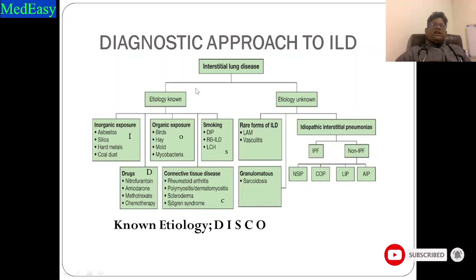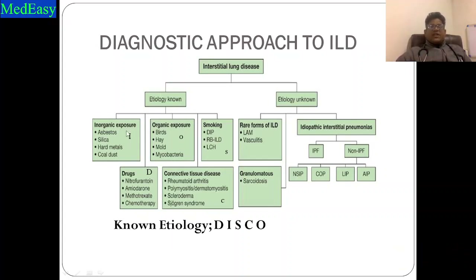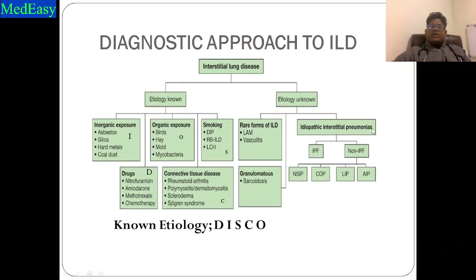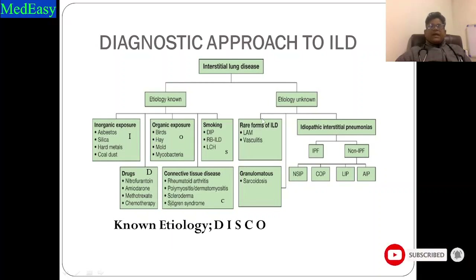It is very important to know the etiology of ILD because when it comes to treatment, if you know the inciting event, you can avoid exposure to those factors and that will lead to improvement in lung function. Where etiology is unknown, ILD is subdivided into idiopathic interstitial pneumonias — IPF and non-IPF. Non-IPF includes NSIP, cryptogenic organizing pneumonia, lymphocytic interstitial pneumonia, acute interstitial pneumonia. There are also rare forms like LAM, vasculitis, and sarcoidosis — an example of granulomatous ILD.